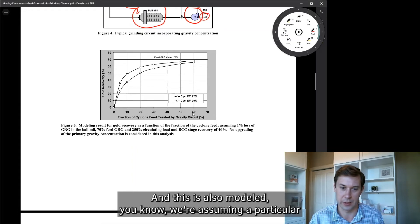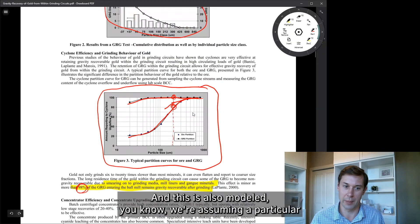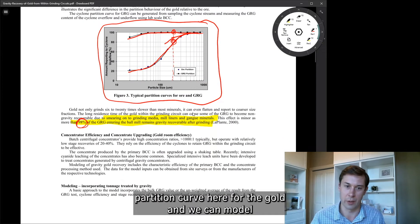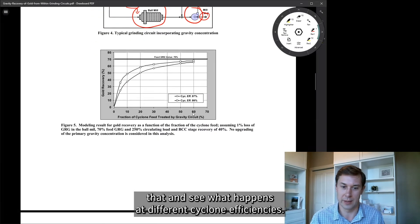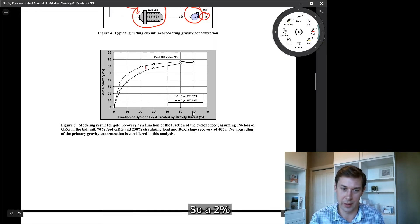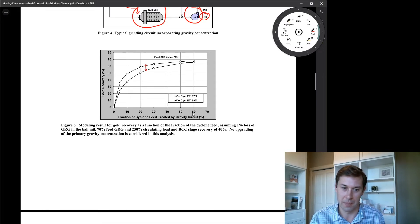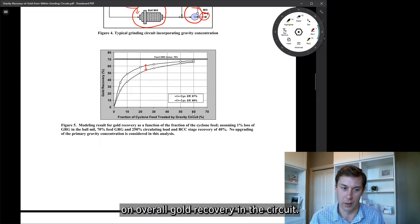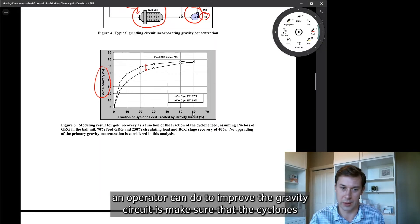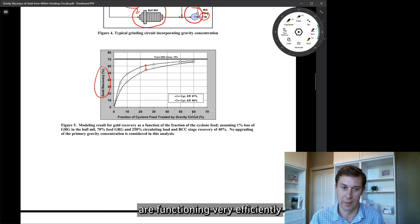And there's a graph down here that just illustrates this a little bit better when we have the gold recovery based on cyclone efficiency. And this is also modeled, we're assuming a particular partition curve here for the gold, and we can model that and see what happens at different cyclone efficiencies. So a 2% difference in cyclone efficiency for the gold retention actually does have a substantial difference on overall gold recovery in the circuit. So this is one of the reasons that one of the best things an operator can do to improve the gravity circuit is make sure that the cyclones are functioning very efficiently, significantly when it comes to gold recovery.